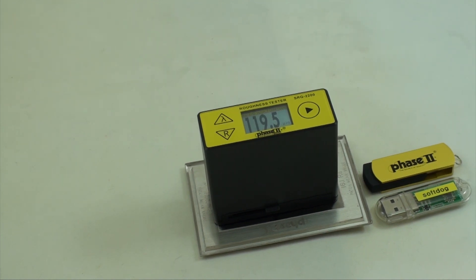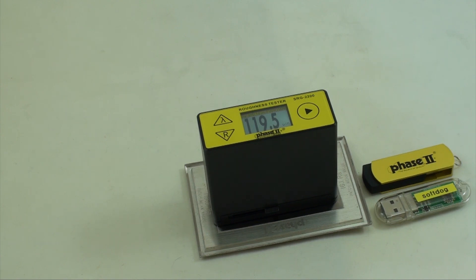This concludes our application and function guide for the Phase 2 SRG2200 Surface Roughness Tester. If you have any questions, please don't hesitate to contact us at 201-962-7373.